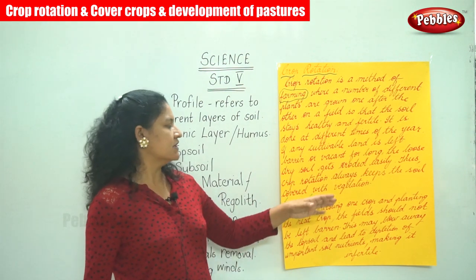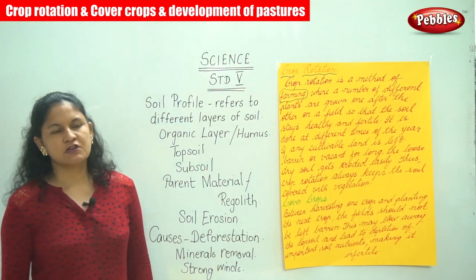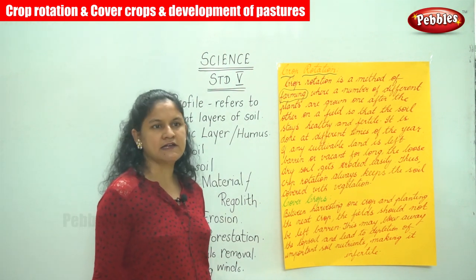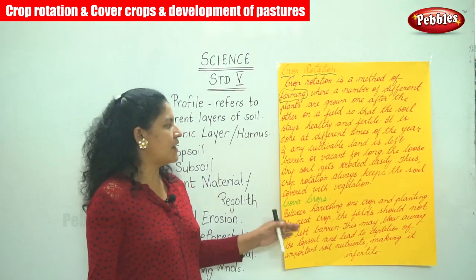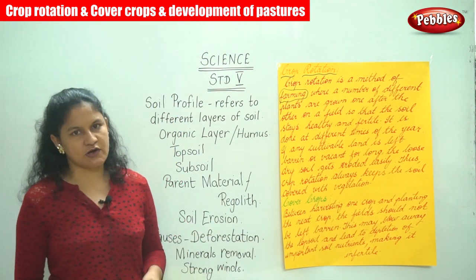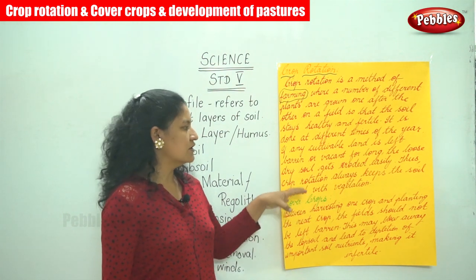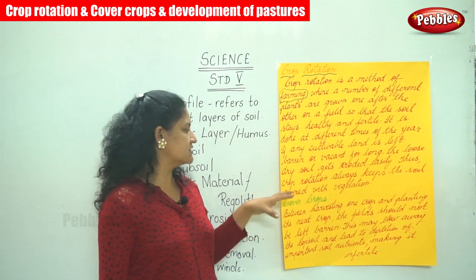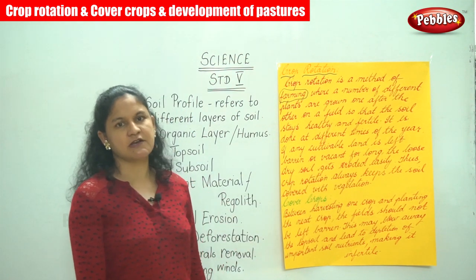If any cultivable land is left barren or vacant for long, the loose dry soil gets eroded easily. Thus crop rotation always keeps the soil covered with vegetation.